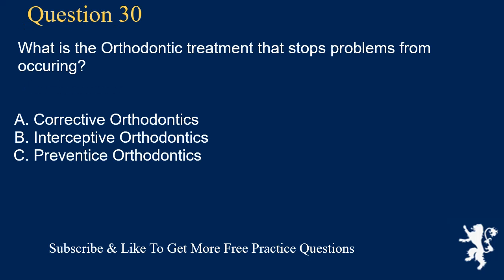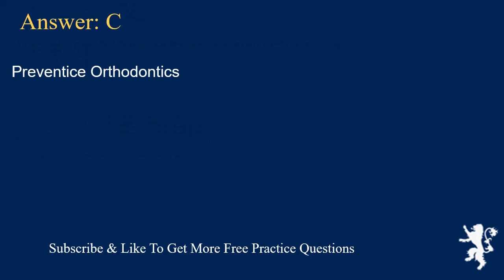Question 30. What is the orthodontic treatment that stops problems from occurring? A. Corrective orthodontics, B. Interceptive orthodontics, C. Preventive orthodontics. Answer: C. Preventive orthodontics.